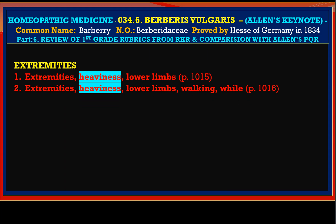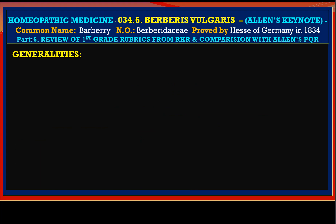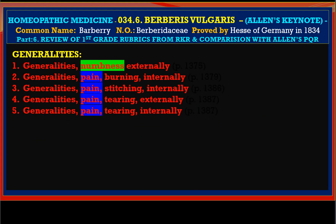In extremities we have heaviness of the lower limbs, aggravated while walking. Stiffness of the lower limbs aggravated while walking in open air. Extremities swelling of the knee — this is arthritis, because this remedy is good for gout also. In general we find numbness, pain burning, stitching, tearing — burning and stitching and tearing pains. Every kind of pain is present here.